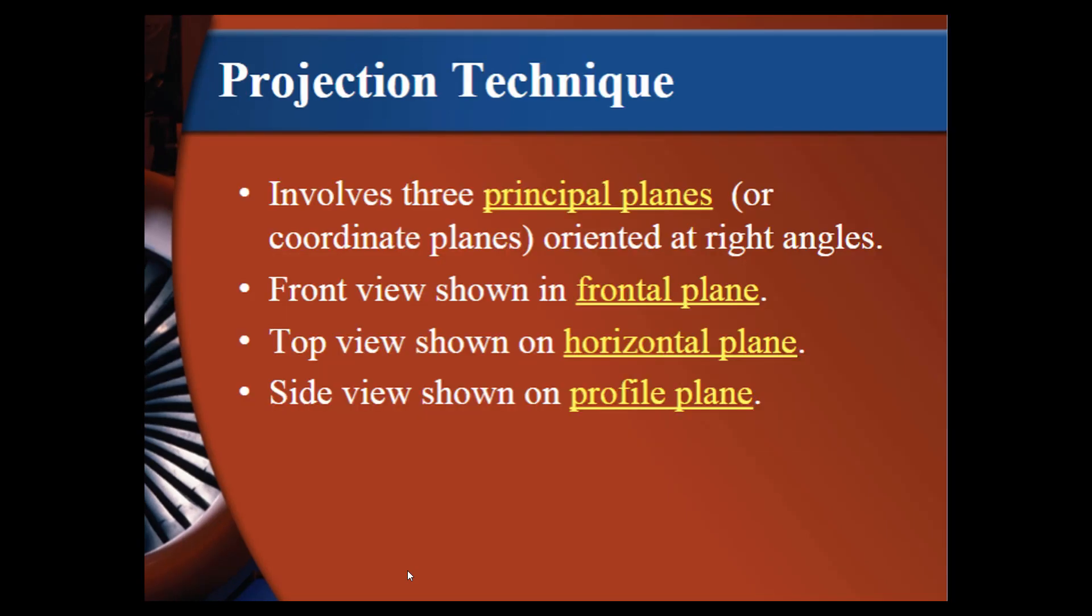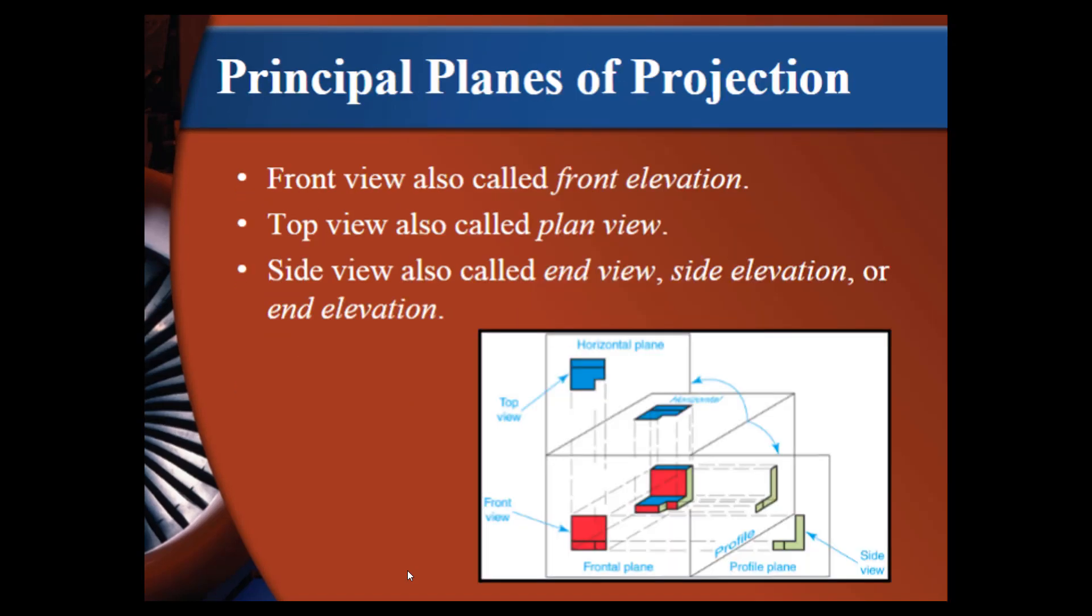The projection technique involves three principal planes, or coordinate planes, oriented at right angles. The front view, which is shown in a frontal plane. The top view, which is shown in a horizontal plane. And the side view, which is a profile plane. In mechanical drafting, we typically call it the front view. In architectural drafting, we might call the building, if we're looking at the front of the building, the front elevation. So those terms can be used interchangeably.